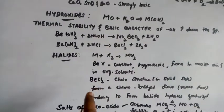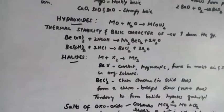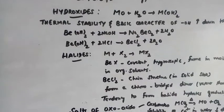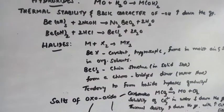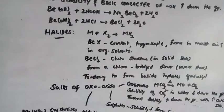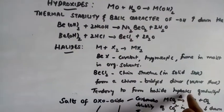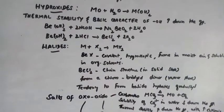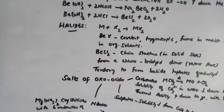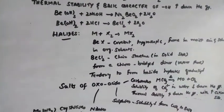Beryllium chloride has a chain-like structure in the solid state — see page 143 for the structure. It forms a chloro-bridged dimer in the vapor state. Alkaline earth metal halides also have the tendency to form halide hydrates — for example, magnesium chloride with 8 molecules of water and calcium chloride with 6 molecules of water. This hydrate formation gradually decreases down the group.